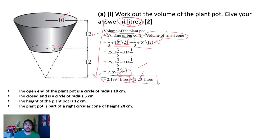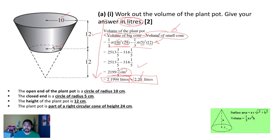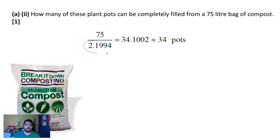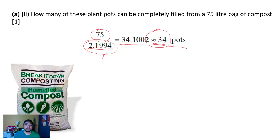It is not that difficult — it requires you to figure out the workings needed to solve the problem. You must remember the formula. Now for the next question: how many plant pots can be completely filled from a 75 liter bag of compost? We found that one pot is 2.20 liters. Take 75 divided by 2.1994 — use the more accurate number, not the rounded one — and you get 34 pots. That's one mark. Very easy application.